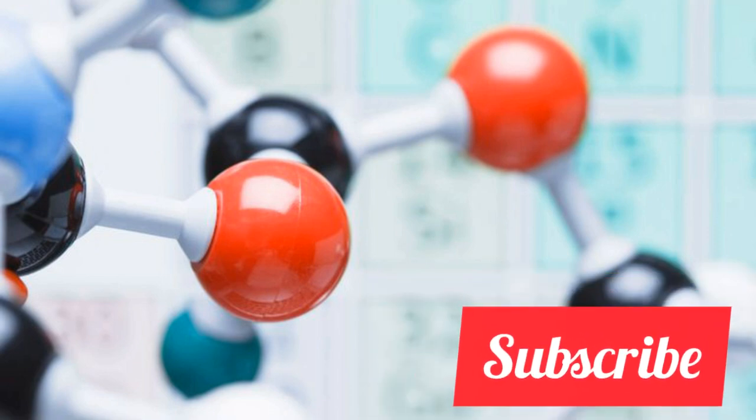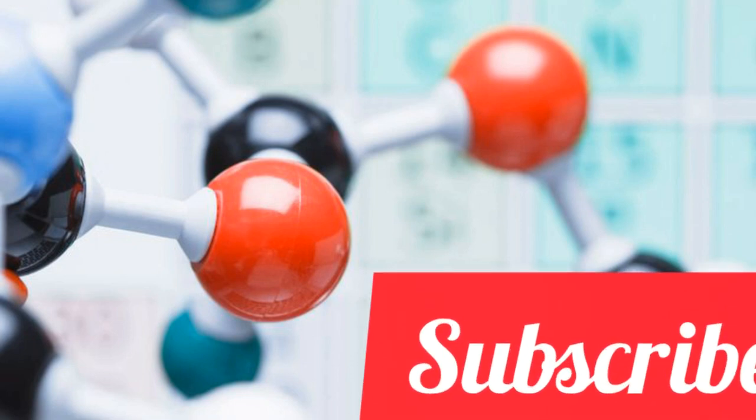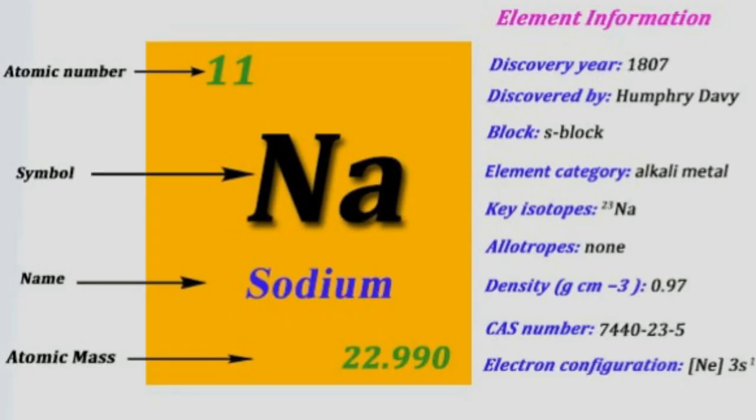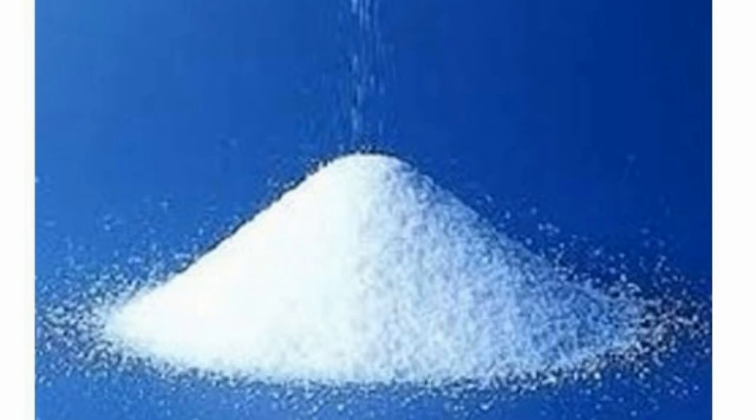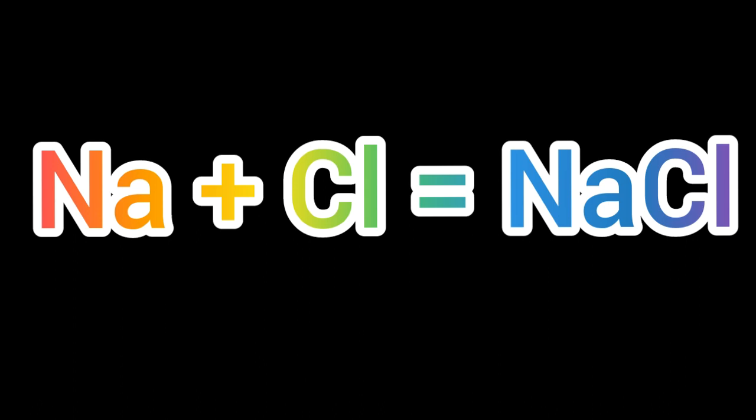In chemistry, we use symbols to represent chemical elements from the periodic table and subscripts to show how many atoms of particular elements exist in the compound. For example, the white solid is sodium chloride. Atoms of sodium and chlorine join together to form compounds: sodium plus chlorine equals sodium chloride.